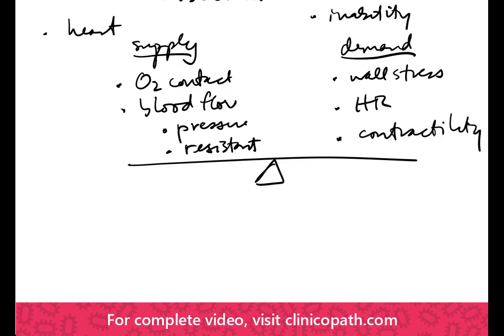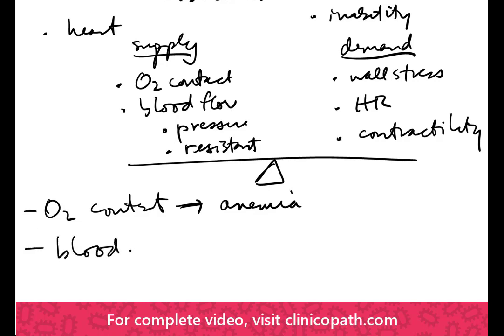Every time you think about a patient with angina — because this presents as pain — we are always thinking about supply versus demand. The O2 content is fairly straightforward; the main disease we consider that causes a drop in O2 content is anemia. When a patient's hemoglobin drops below about 10 grams percent, they may start expressing chest pain. When we talk about blood flow, this really comes down to Poiseuille's law.